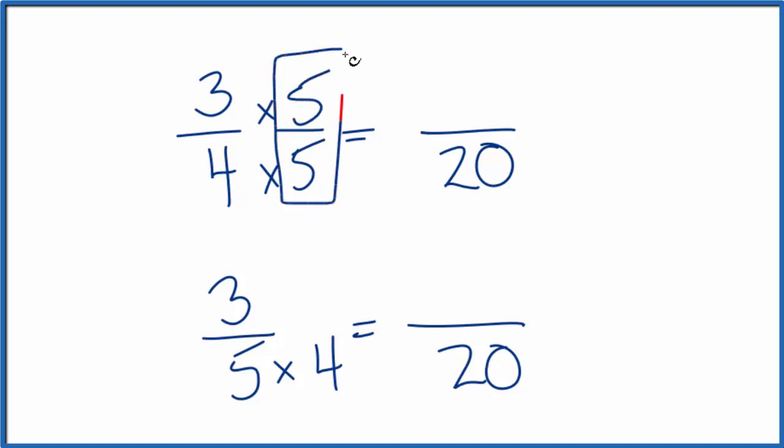Because this is equal to one. So I'm not really changing anything. Three times five is fifteen. Four times five is twenty. Three-fourths is equivalent to fifteen over twenty.